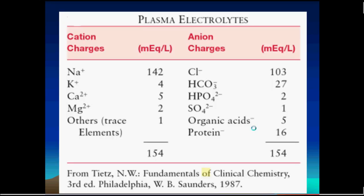Electroneutrality means that when we look at the extracellular compartment of the body, which is the topic of the ABG, this compartment is formed of positive and negative charges — cations and anions. The sum of the cations equals the sum of the anions. The positive charges equal the negative charges. This is electroneutrality.